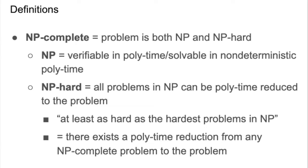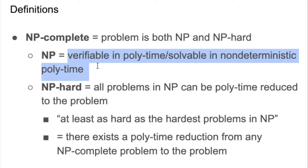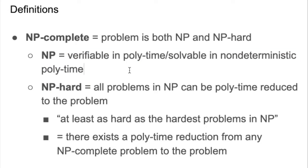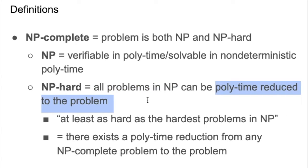Let's review some definitions again. If a problem is NP-complete, it just means that it's both in NP and NP-hard. We already know what NP means: the problem is verifiable in polynomial time, or solvable in non-deterministic polynomial time. Now what does it mean to be NP-hard? It just means that every problem in NP can be polytime reduced to your problem.